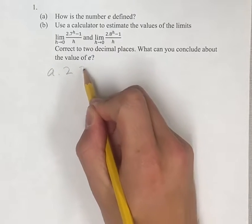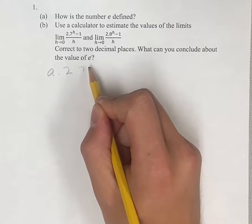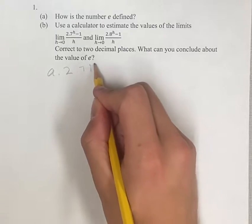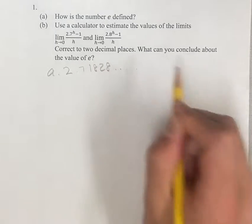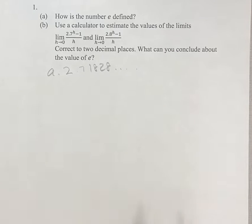And e is just 2.71828. And it keeps going on, but we don't need the rest. Just the first couple of decimal places will do.